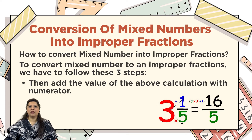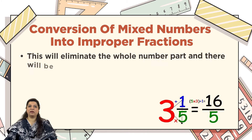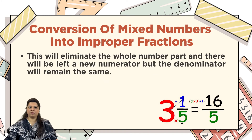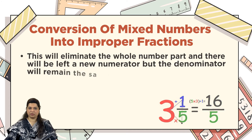Step 3: this eliminates the whole number part, leaving only the new numerator with the same denominator. So by doing 5 multiplied by 3 plus 1, we get the new numerator 16. The whole number 3 is eliminated and we now have an improper fraction from the mixed number.